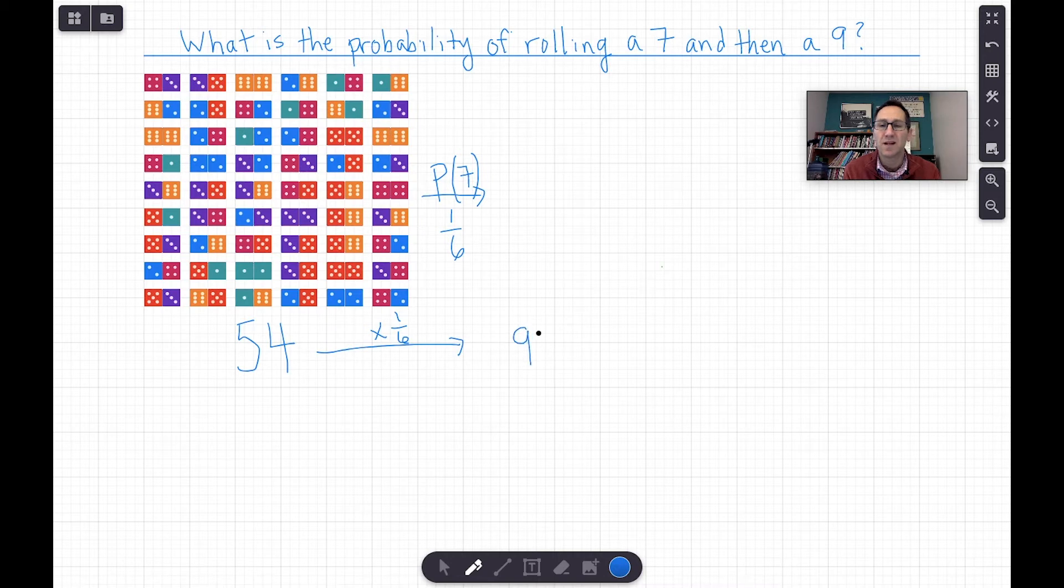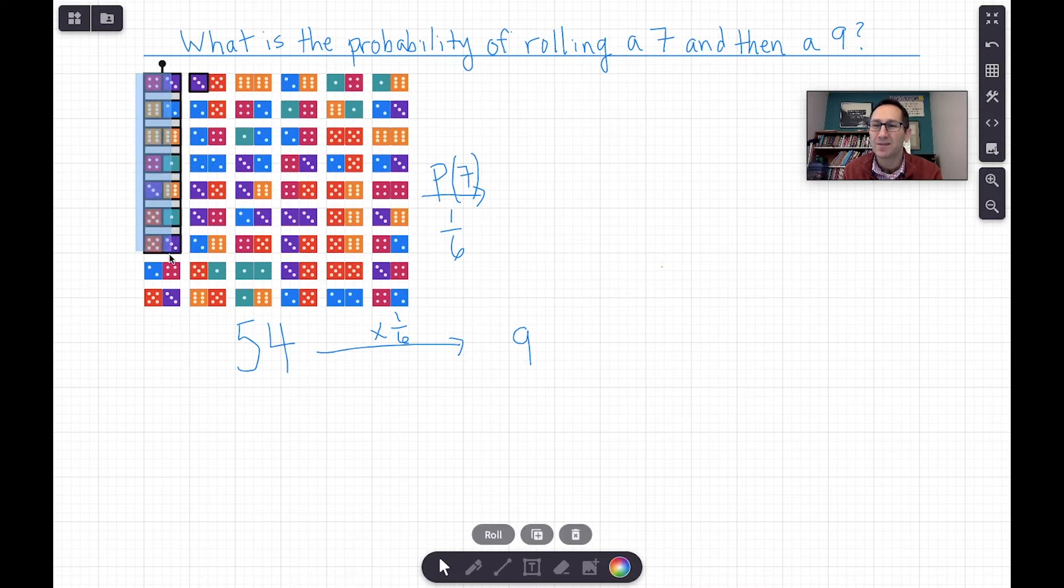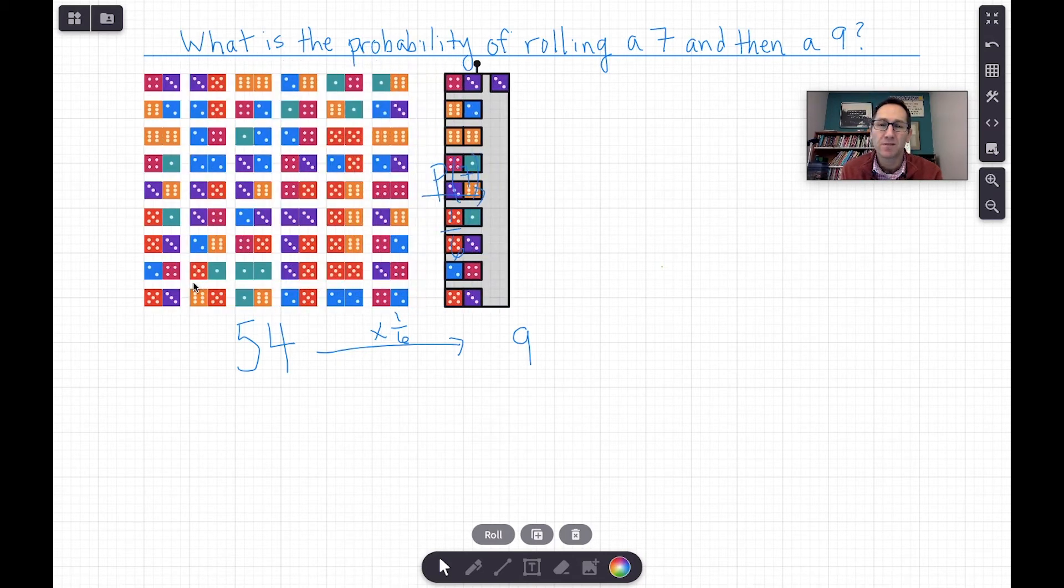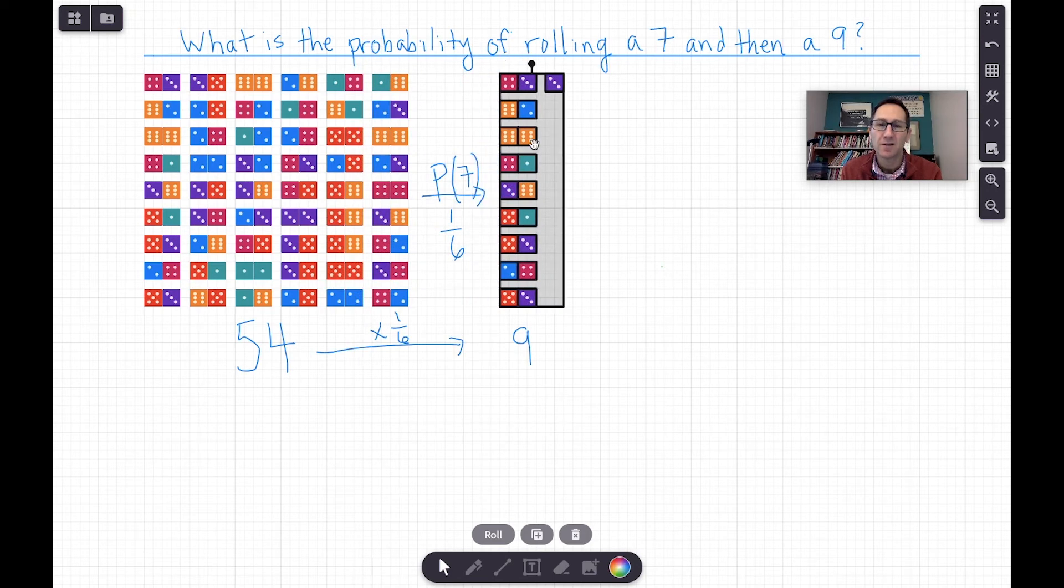And so we know that 54 times a sixth is nine. And we would expect nine of these 54 dice to come up as a seven. And so then because I have six columns of nine here, we could just copy these and move them over. We got an extra one by mistake, so I'll get rid of that. So there's the nine that we would expect to be a seven.